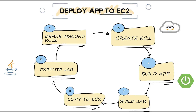In the last video, we created an AWS EC2 instance, created a Spring Boot application from scratch, built its JAR, copied it to AWS EC2 from local system via command line, and defined a security rule for access to port 8080. This is the whole workflow of the process we followed.